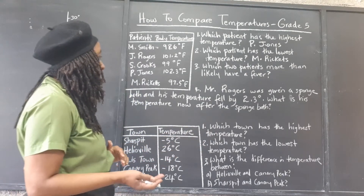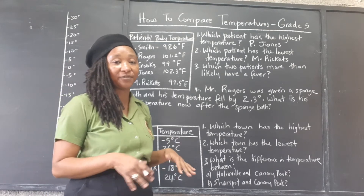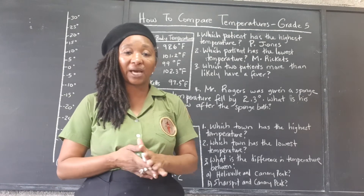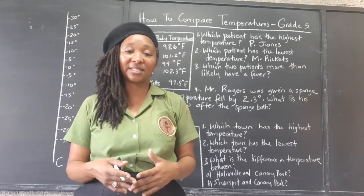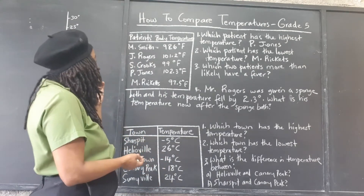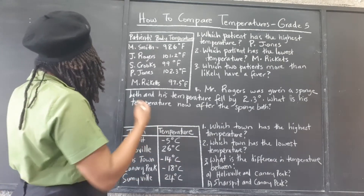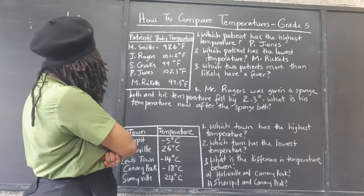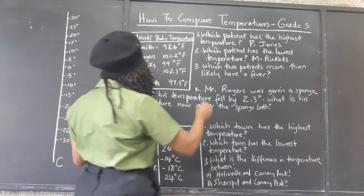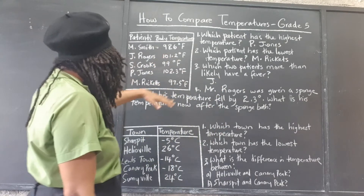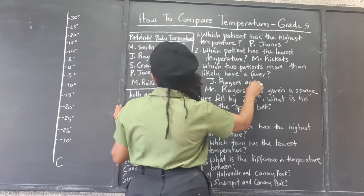Which two patients more than likely have a fever? In a fever, your body is trying to fight off some kind of infection or get rid of a substance in the body. There's increased activity within the body, which makes the temperature rise. Anything over 100.2 — so that would be J. Rogers at 101.2 and P. Jones at 102.3. They seem to be having a fever.